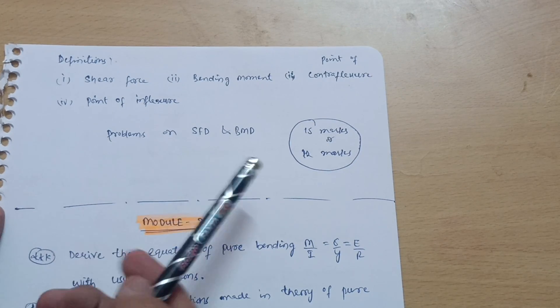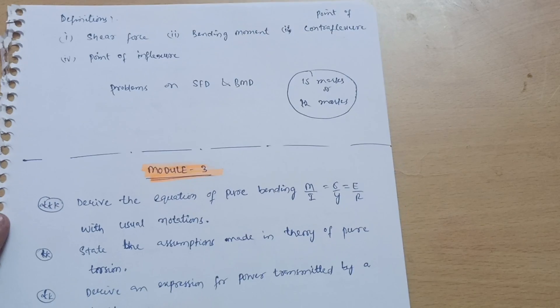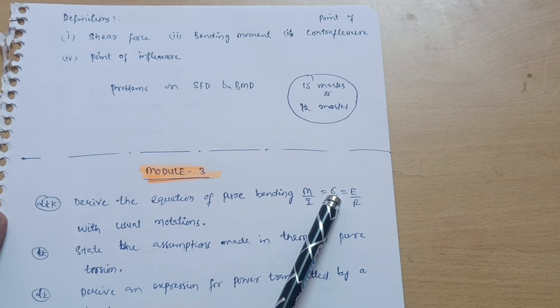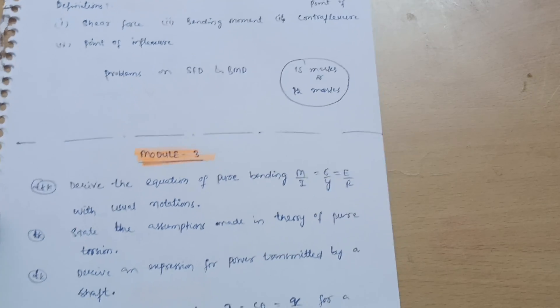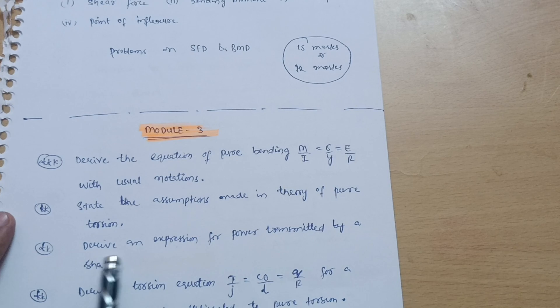This is all about Module 2, the theory questions, whatever I mentioned they may ask in the examination. Rest of the questions are SFD and BMD. Next is Module 3: derive the equation of pure bending, M by I is equal to sigma by Y is equal to E by R, most important one.